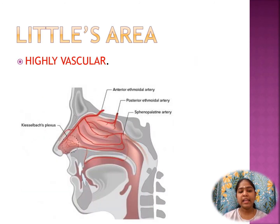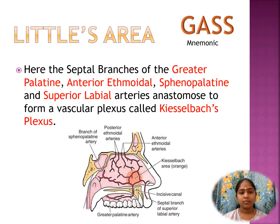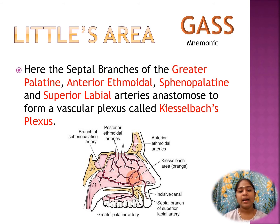Little's area is highly vascular, supplied by five major blood vessels: the greater palatine artery, anterior ethmoidal artery, superior labial artery, and the sphenopalatine artery. The greater palatine artery is a branch of the maxillary artery, the anterior ethmoidal artery is a branch of the ophthalmic artery, the sphenopalatine artery is a terminal branch of the maxillary artery, and the superior labial artery is a branch of the facial artery.